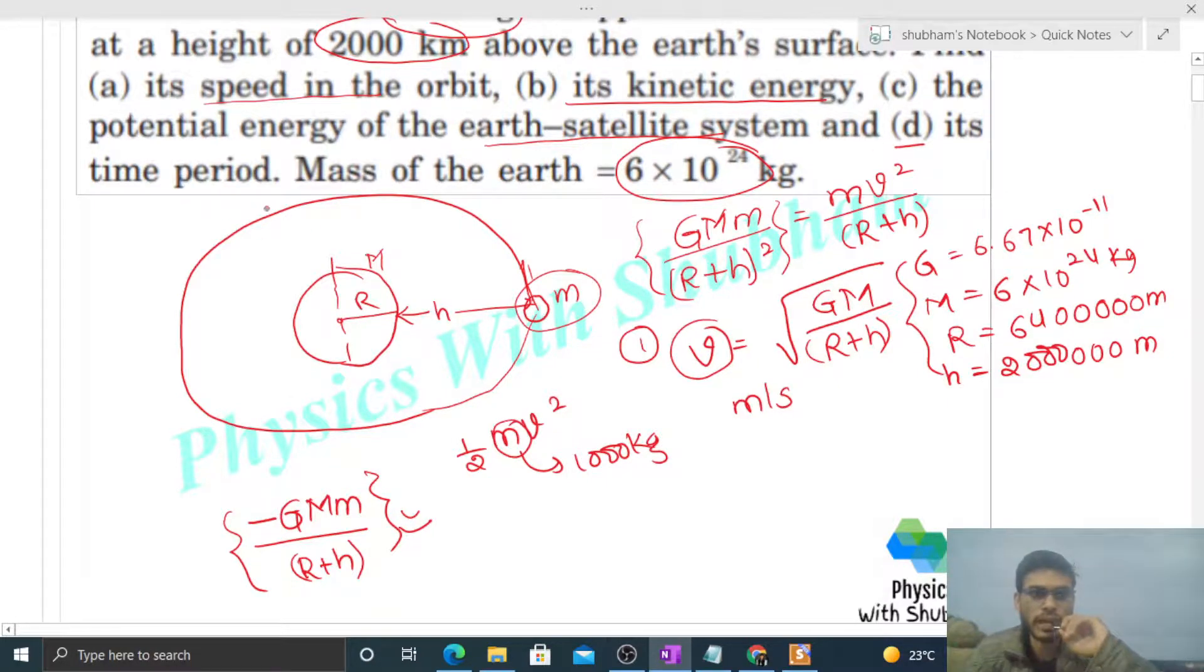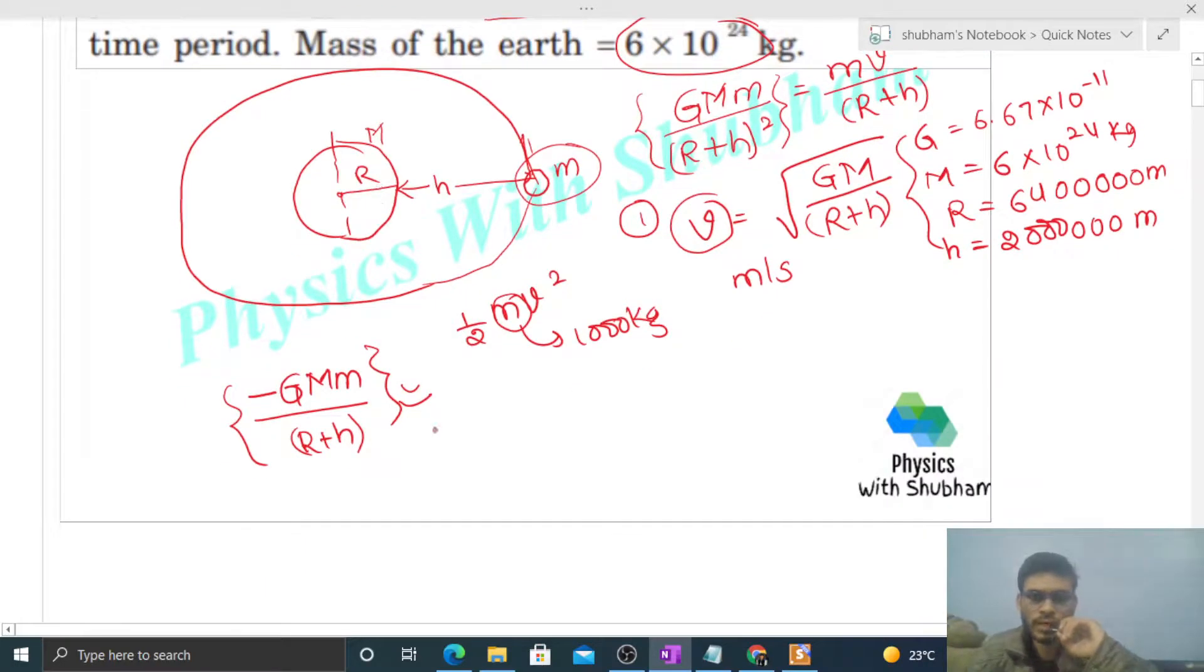Let's check the time period. Time period is found by looking at how much distance it has to cover, that is the circumference of this orbit, which will be 2π(R + h), that is the circumference of this orbit, divided by speed. Distance by speed will give you the value of time. Speed we have already calculated in the first part, so putting the speed value here we can find out the time taken by this satellite to complete one revolution around the Earth.